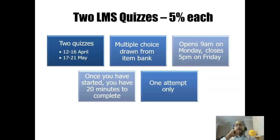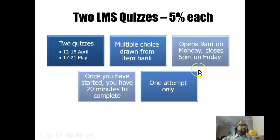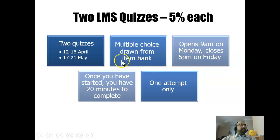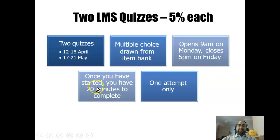The two LMS quizzes are worth 5% each, running in weeks 7 and 12. These are multiple-choice quizzes. The quizzes will open on the Monday of the week at 9 a.m. and close on the Friday at 5 p.m. You can take the quiz any time during the week. Note that items are drawn from an item bank, so you and your classmates are unlikely to get the same set of questions. You have 20 minutes to complete the quiz and only one attempt.